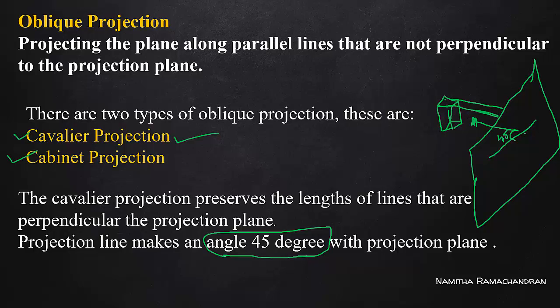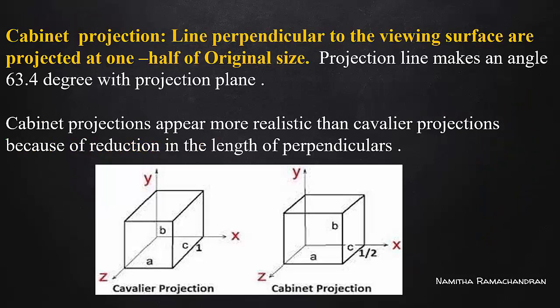In Cavalier Projection, the parallel projection line hits the projection plane at 45 degrees. The Cavalier Projection preserves the length of the lines of the object that are perpendicular to the projection plane. For the set of lines perpendicular to the projection plane, there is no size reduction. That is the Cavalier Projection property.